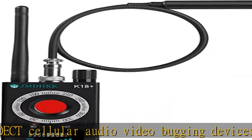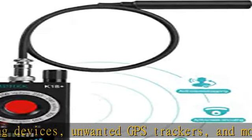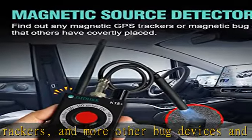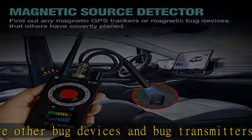The 6th generation upgraded microprocessor was embedded in our product, enabling JMDHKK anti-spy detector to work more intelligently and accurately with strong anti-interference, ultra-far detecting range, comprehensive signal accumulation and algorithm, and long-lasting battery life.